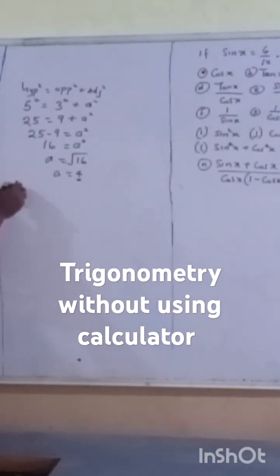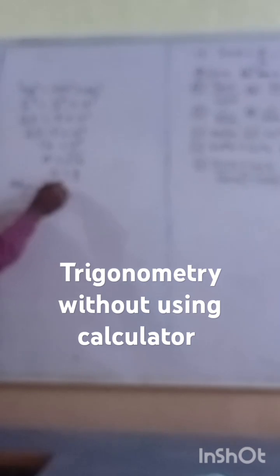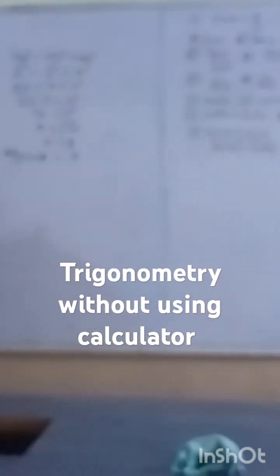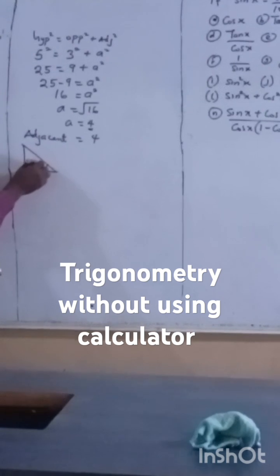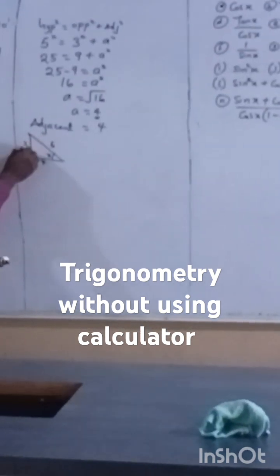So my adjacent is 4. I can now label the triangle with sides x, 3, 4, and 5.